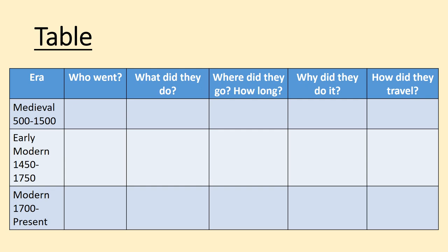What we'd like you to do now is find a piece of paper — about half an A4 size sheet — and take a few minutes to recreate this table. In the left-hand column there are three historical eras: the medieval era from 500 to 1500, the early modern era from 1450 to 1750, and the modern era from 1700 to the present.